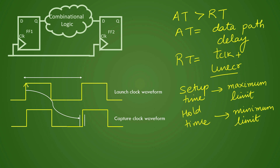We have understood the same concept through a waveform also. This is the launch edge at which the data is being launched. This is your clock period. If you want to check the setup time, it is checked at the capture edge for the capture flop — the data should be stable before this capture clock edge occurs. For hold time, we check at the same edge for the capture clock — this is the window where you check the capture flop hold time. So hold time is checked at the same edge and setup is checked at the next edge.